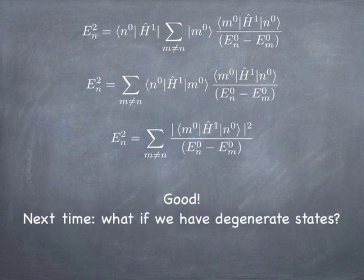Next time we're going to talk about what happens when we have degenerate states. We've assumed that the original unperturbed eigenstates are all non-degenerate, which is true for one-dimensional problems. In higher-dimensional problems like the hydrogen atom or the two-dimensional simple harmonic oscillator, you often have states of degenerate energy, and we'll run into trouble with that energy denominator if we permit degenerate states. So we have to be careful in those cases, and that requires a whole other day to think about.